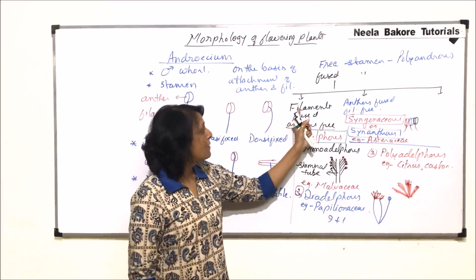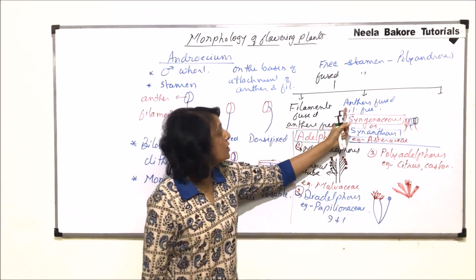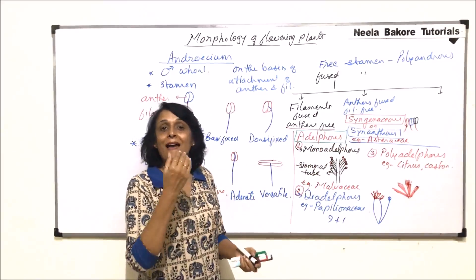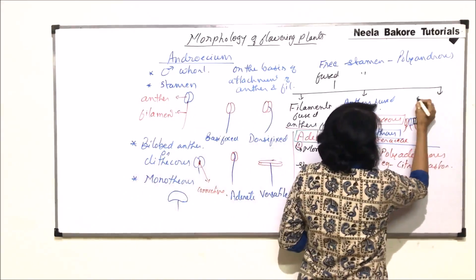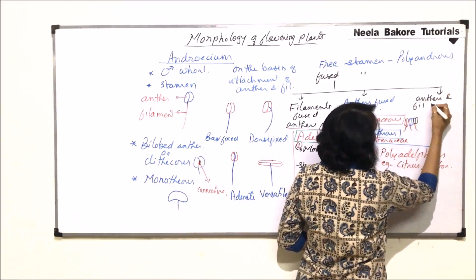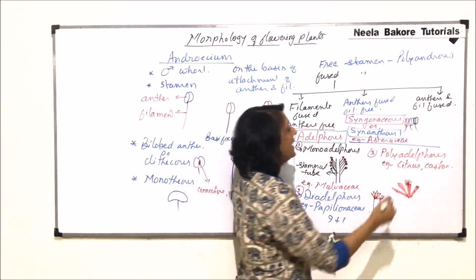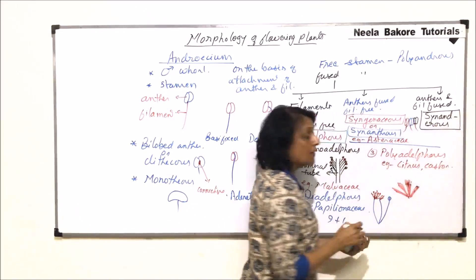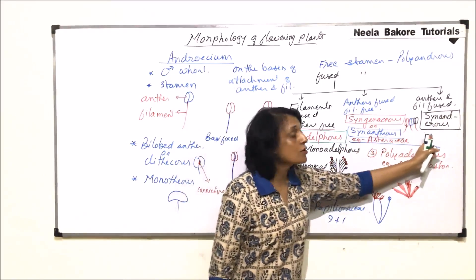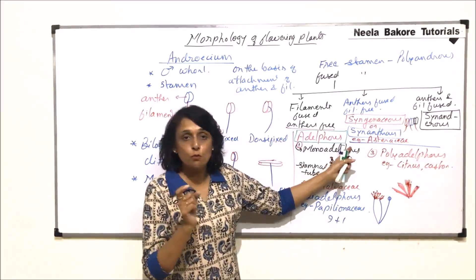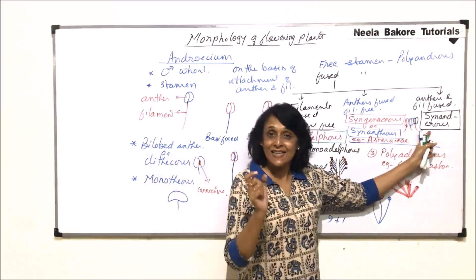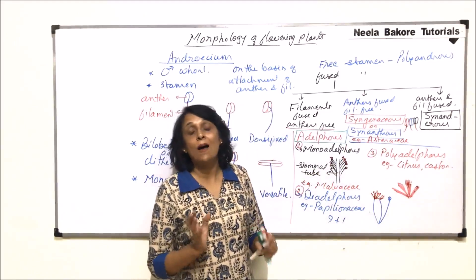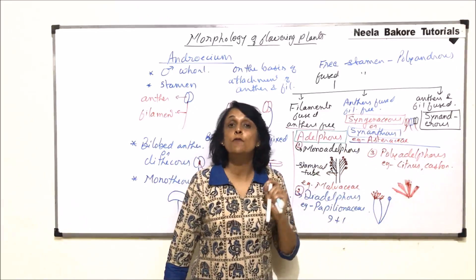To summarize the three fused conditions: in the first, filaments are fused and anthers are free — the adelphous condition. In the second, anthers are fused and filaments are free — the synanthrous or syngenaceous condition. In the third condition, both anthers and filaments are fused — this is known as synandrous. 'Syn' always means fused; 'andrus' refers to the androecium. These three are the important fused conditions.